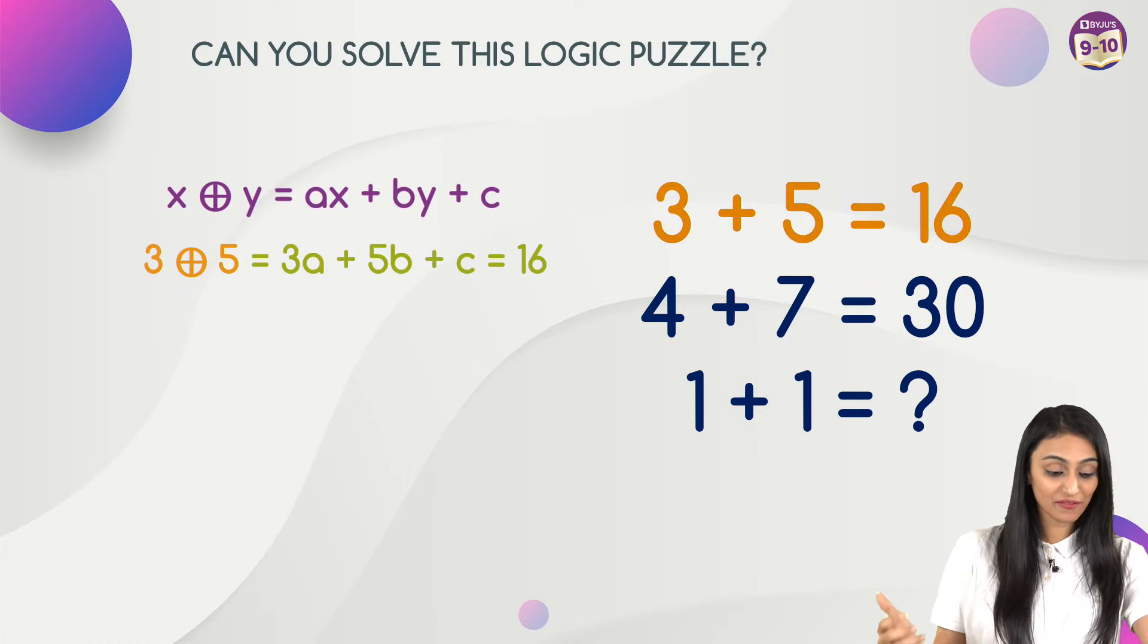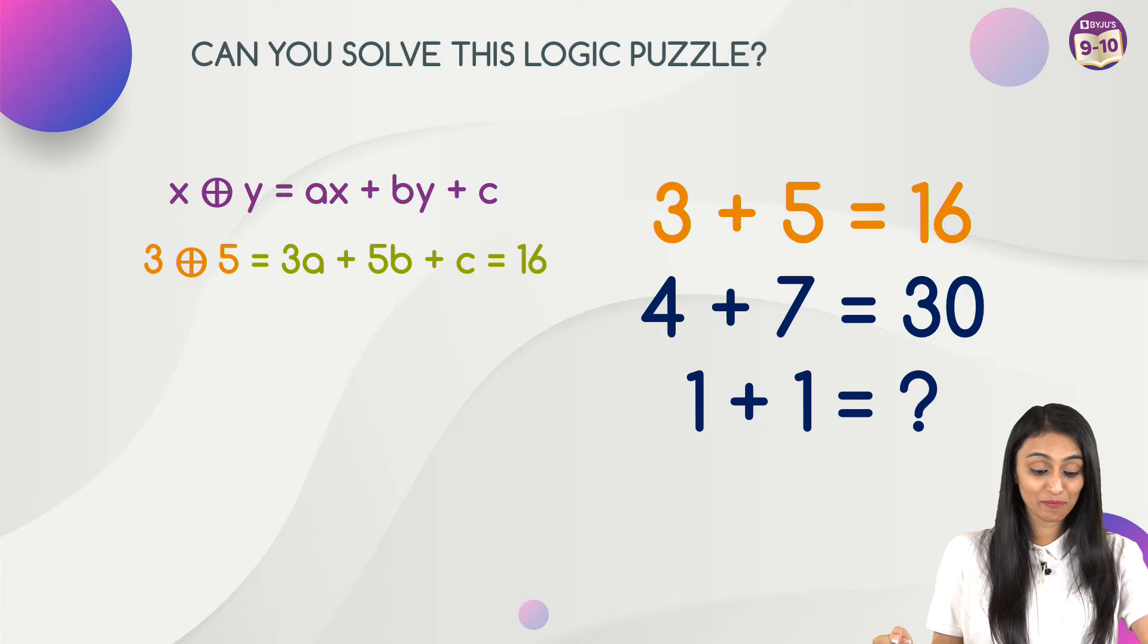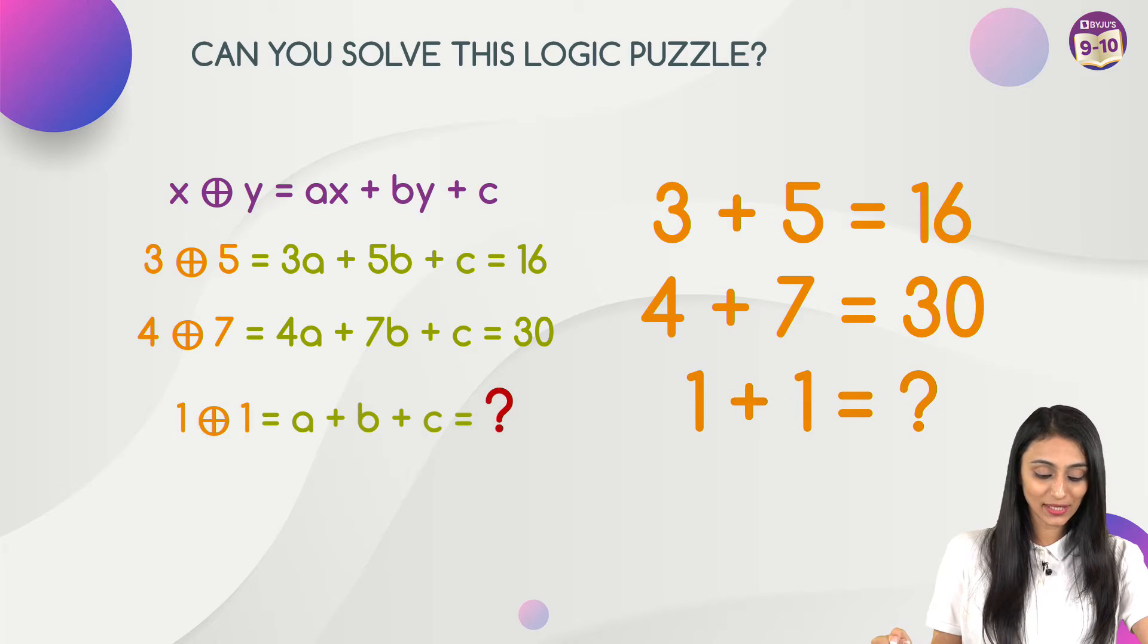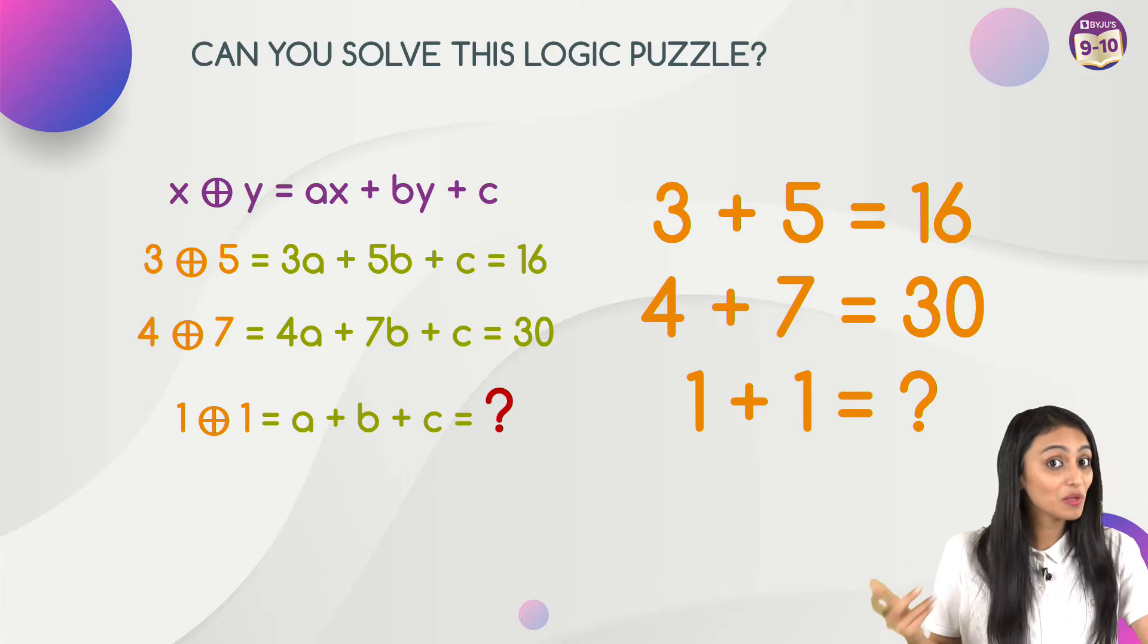So if I apply this to 3 and 5, that's going to be 3a plus 5b plus c, which equals 16, and if we apply that to 4 and 7, that's going to be 4a plus 7b plus c equals 30. Now similarly, for 1 and 1, it's going to be a plus b plus c going to be what?